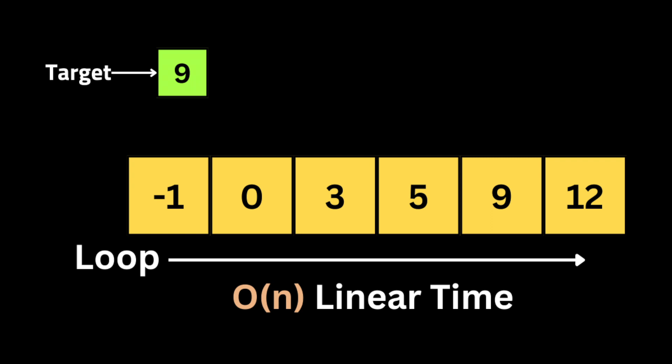Let's take an example — say we have a sorted input array and a target integer equal to 9. We want to search for 9 in the array of integers and return its position or index.